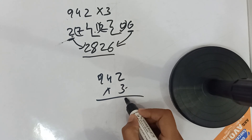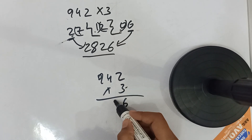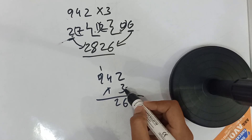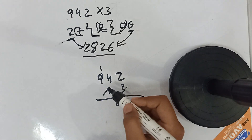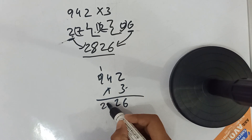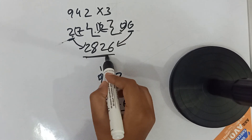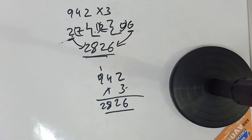Let's verify: 3 twos are 6, 3 fours are 12 — write 2, carry 1, then 3 nines are 27 plus 1 is 28. So the answer is 2826. See how quickly you can answer this!